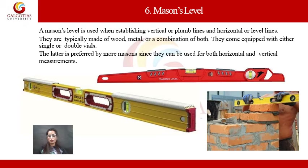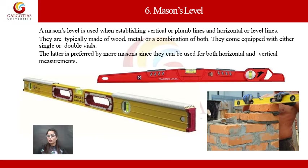The next masonry tool is the mason level. A mason level is used when establishing vertical or plumb lines and horizontal or level lines. They are typically made of wood, metal or a combination of both, and come equipped with either single or double vials. The double vial type is preferable since it can be used for both horizontal and vertical measurement. You can see a live example of a mason using a mason level during wall construction.